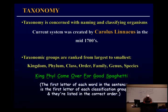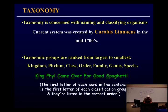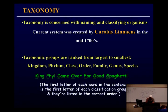Taxonomy is basically a way of naming and classifying organisms into groups based on how they're related to one another. The taxonomic system was developed by Carolus Linnaeus in the 1700s. It groups things into broad groups that become more specific. The broadest groups are the kingdoms — there are five kingdoms. The first is Monera, which includes all the prokaryotes — the bacteria.